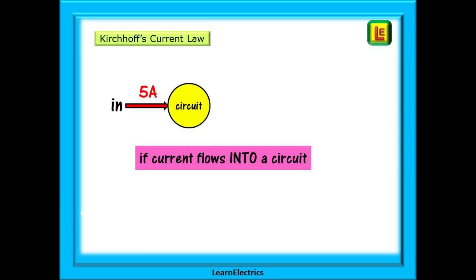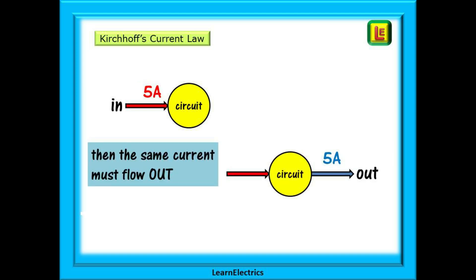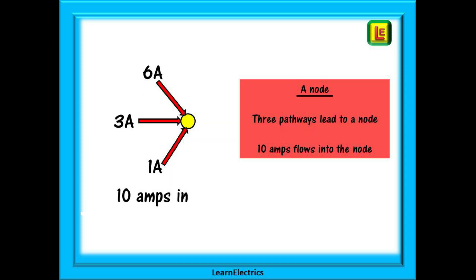Kirchhoff's current law tells us that if 5 amps flows into a circuit, then the same 5 amps must flow out of it. If we look at a single electrical point, a node where several components meet, we can add up all the currents that are flowing into that point. We usually visualize conventional current flow—that is, flowing from positive to negative.